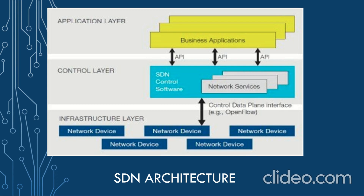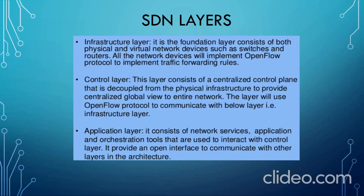As you can see in the diagram, various network devices are connected from the infrastructure layer to the control layer using protocols such as OpenFlow. The infrastructure layer is the foundation layer which consists of both physical and virtual network devices, such as switches and routers. All the network devices will implement the OpenFlow protocol to implement traffic forwarding rules. The control layer consists of a centralized control plane that is decoupled from physical infrastructure to provide a centralized global view of the entire network. The application layer consists of the network services, applications and orchestration tools used to interact with the control layer, and provides an open interface to communicate with other layers in the architecture.